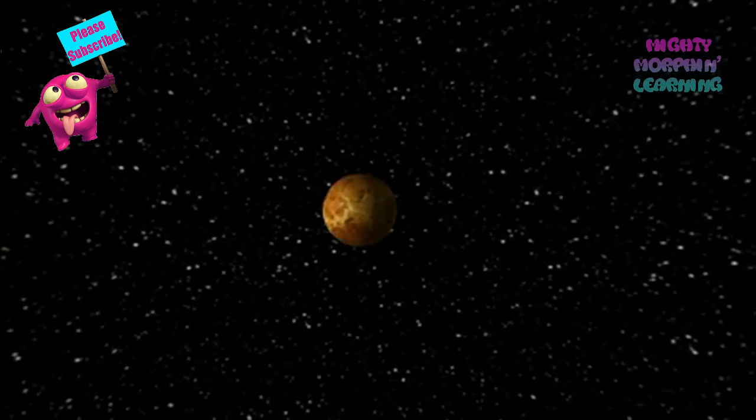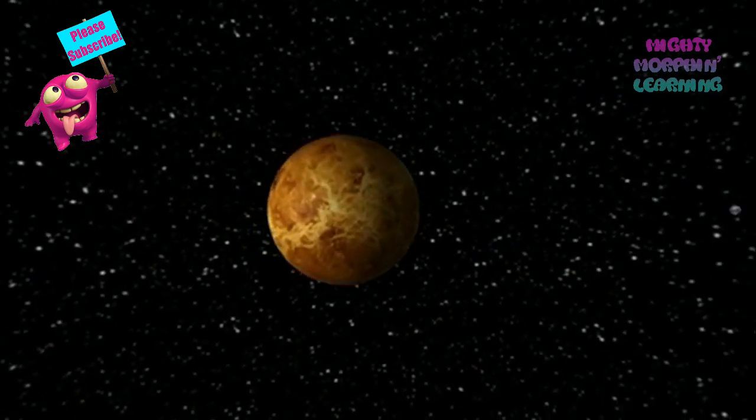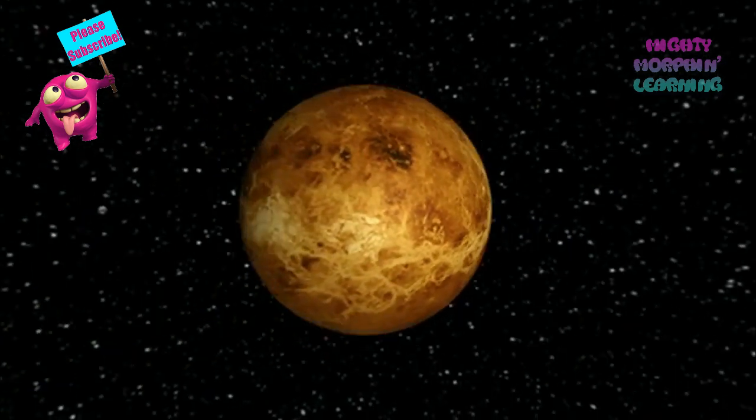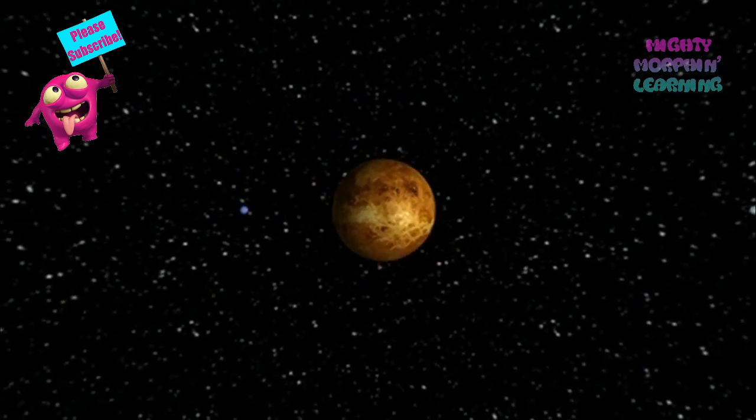The second planet from our sun is Venus. It is the hottest planet. It's similar in size to Earth, and its surface is covered by volcanoes.